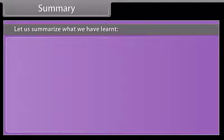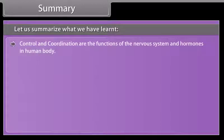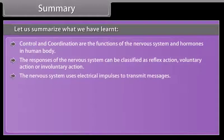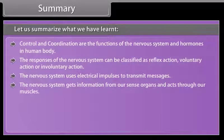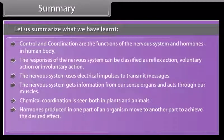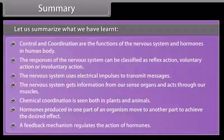Let us summarize what we have learned. Control and coordination are the functions of the nervous system and hormones in the human body. The responses of the nervous system can be classified as reflex action, voluntary action, or involuntary action. The nervous system uses electrical impulses to transmit messages and gets information from our sense organs, acting through our muscles. Chemical coordination is seen both in plants and animals. Hormones produced in one part of an organism move to another part to achieve the desired effect, and a feedback mechanism regulates the action of hormones.